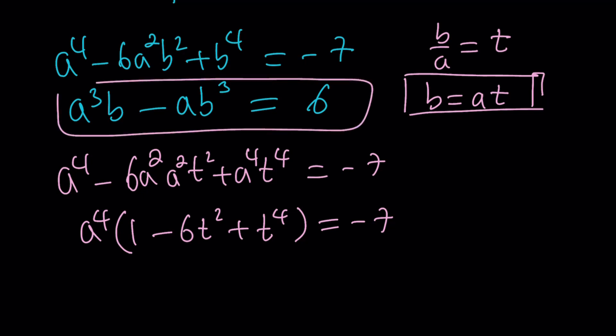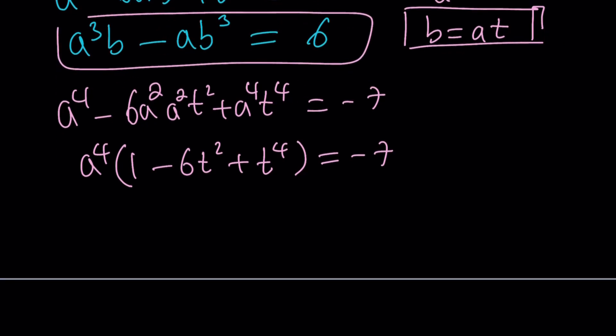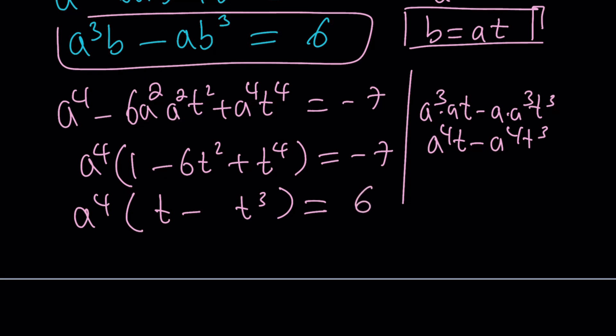And in the second equation, this one, if you do the same thing, you're going to get, let's see, let's do the work here so we can write it underneath that. A cubed times AT minus A times A cubed, T cubed. And that's going to give us A to the fourth, T minus A to the fourth, T cubed. So if you take out A to the fourth from the second equation, you're going to get T minus T cubed. And that product is equal to 6. Awesome.